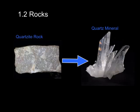So let's see some examples. Take a quartzite rock — it's made from one mineral: quartz.